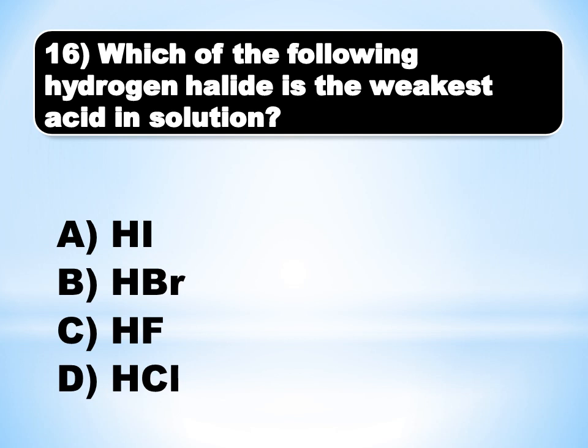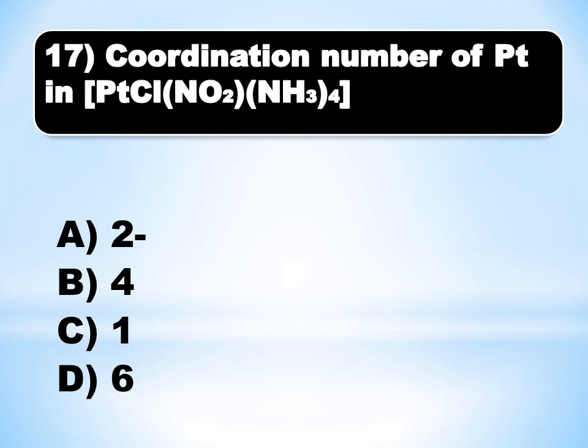MCQ number 15/16: Which of the following hydrogen halides is the weakest acid in solution? Which hydrogen halide will not donate? The answer is C (charlie): HF, because of the strong hydrogen bonding between two fluorine atoms.